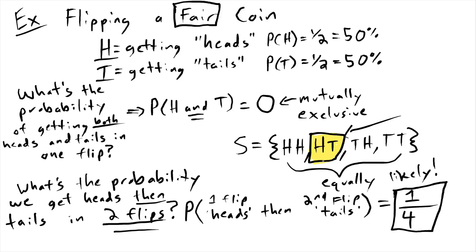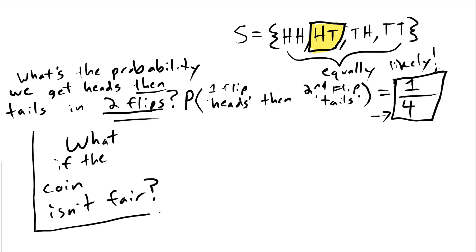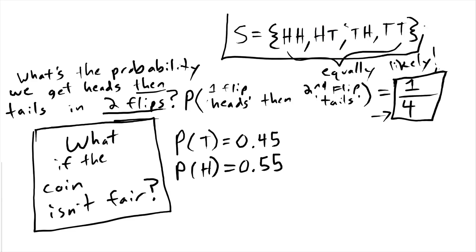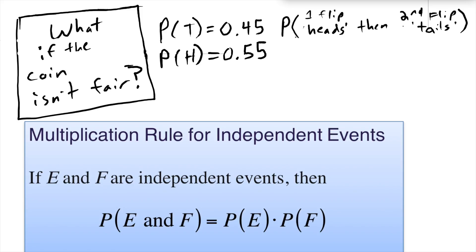But here's a question: what if the coin isn't fair? What if the probability of tails was slightly less than the probability of heads? This technique of just counting isn't going to work because our sample space of four outcomes are not going to be equally likely anymore. So we want to know the probability that the first flip is heads and the second flip is tails.